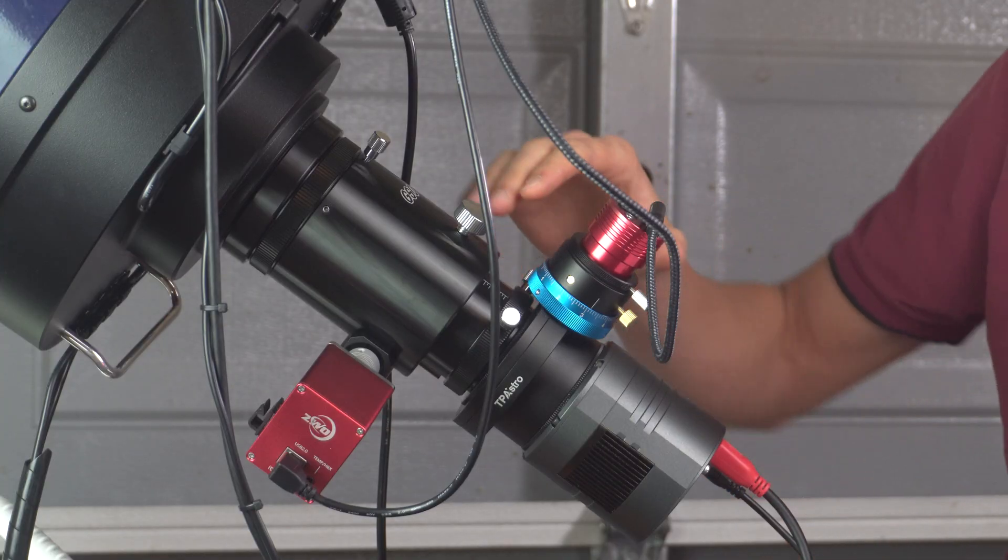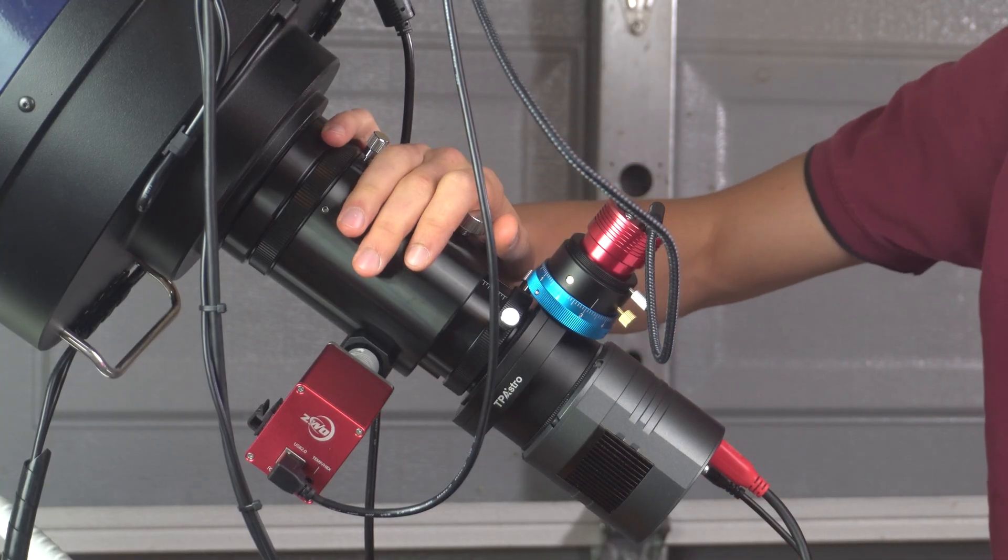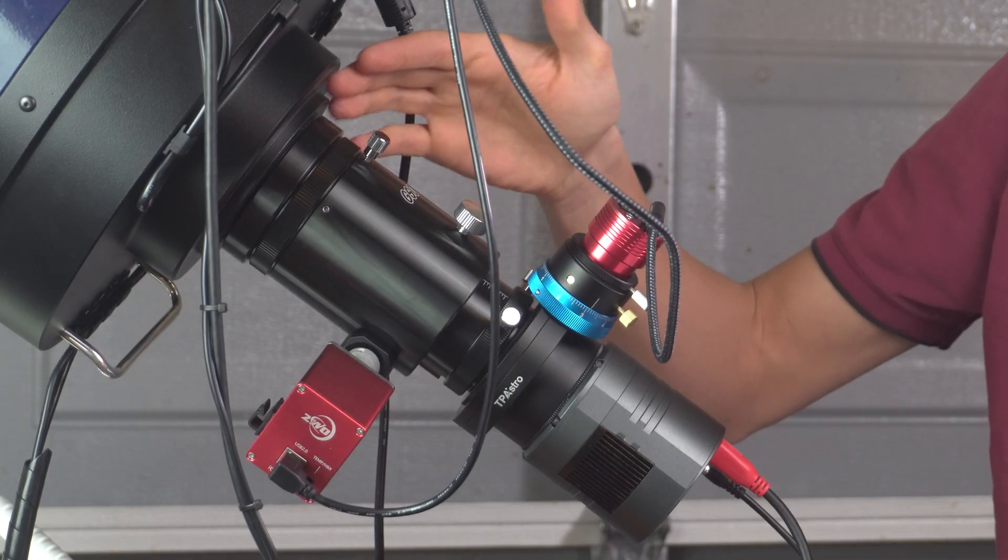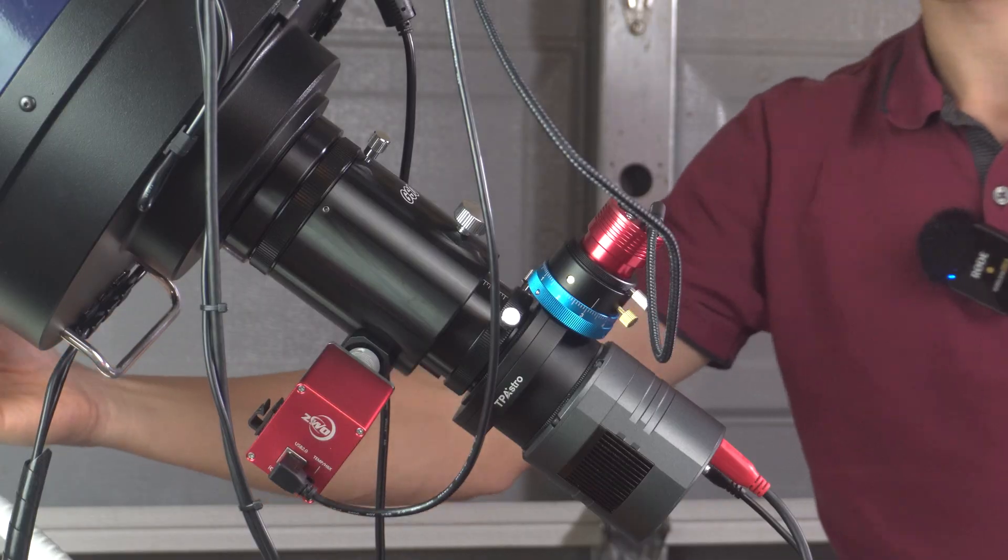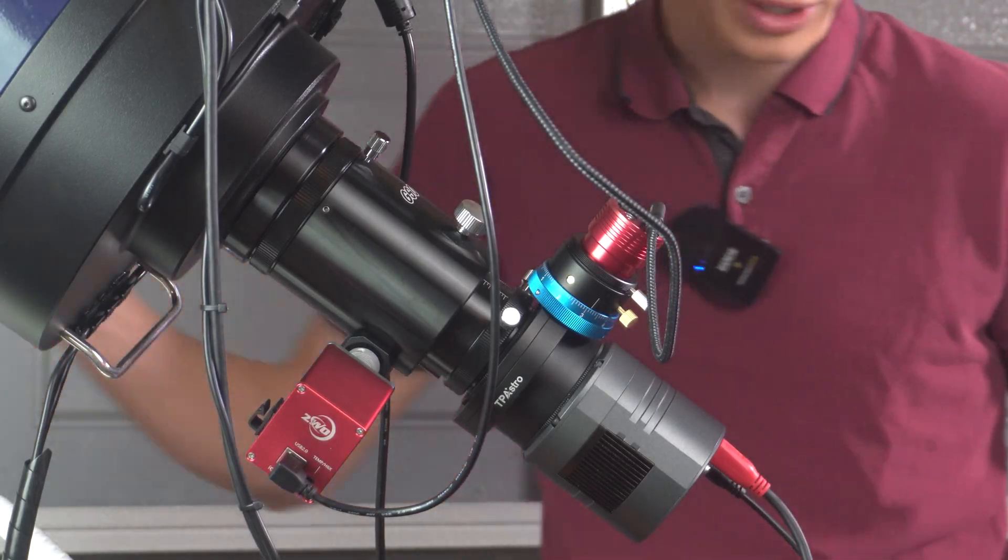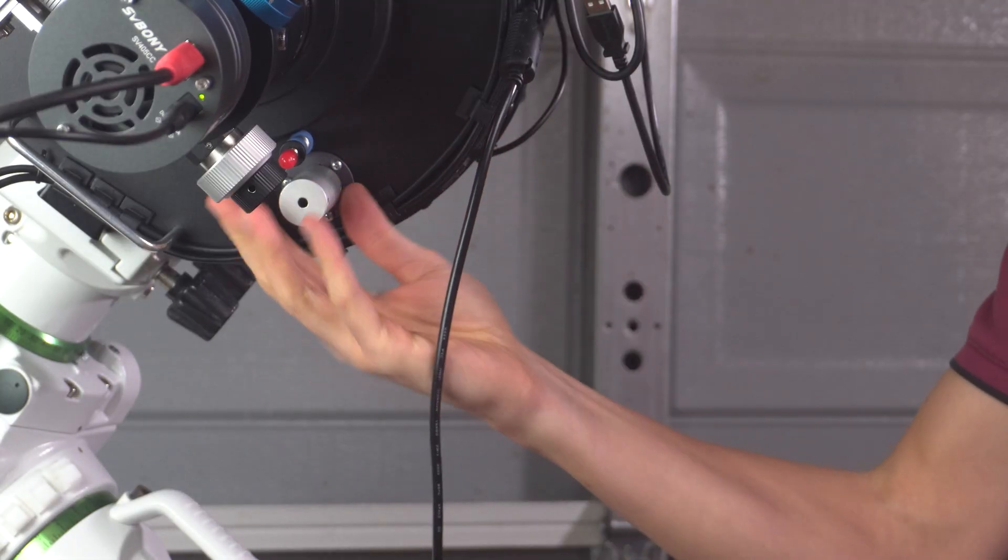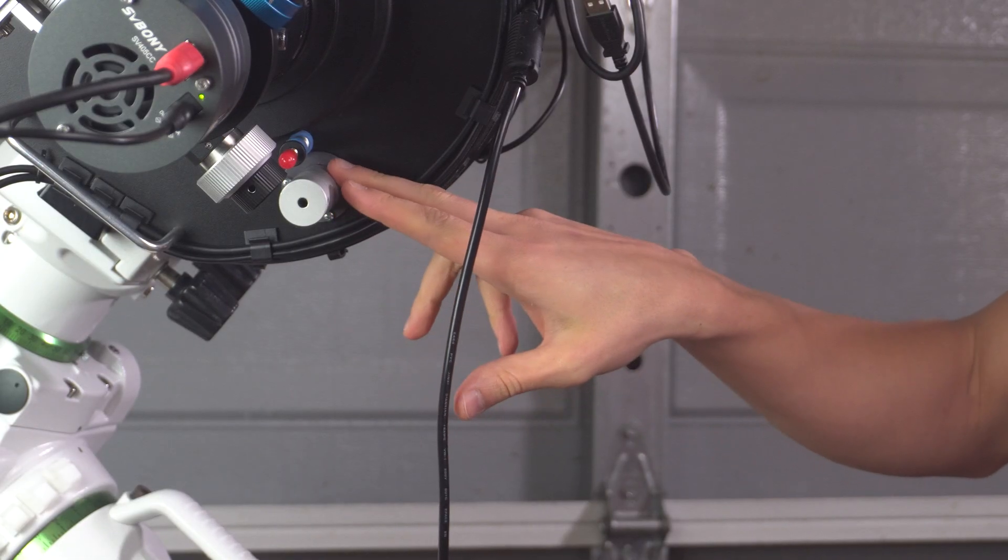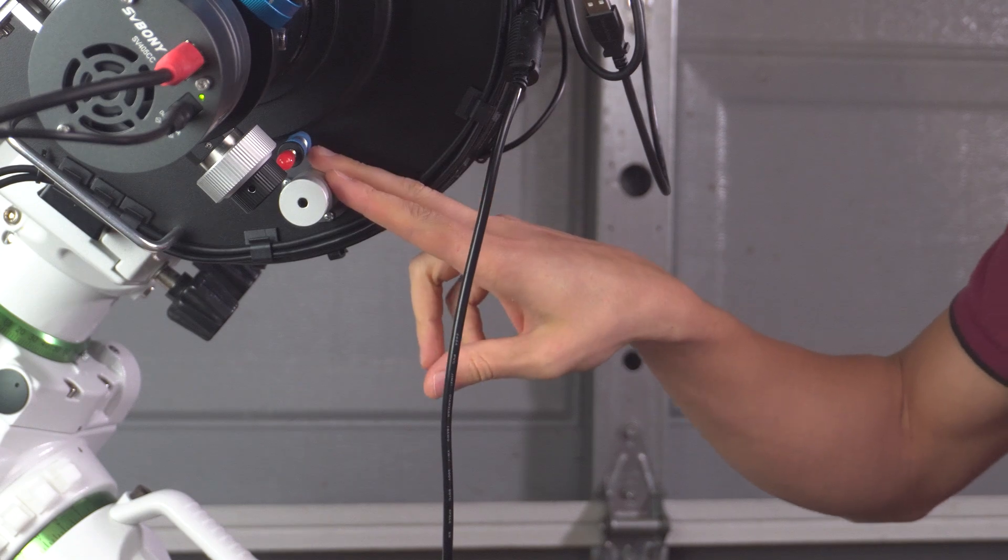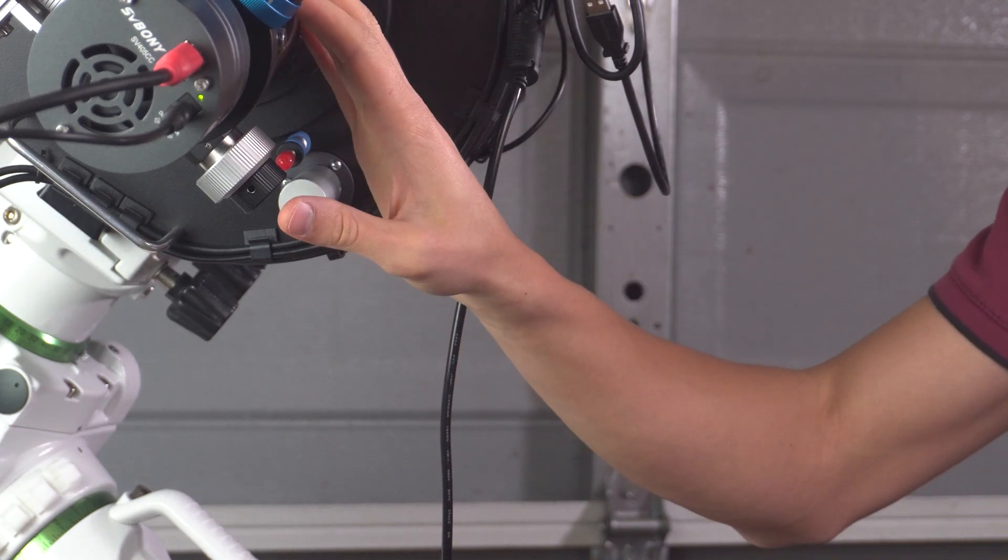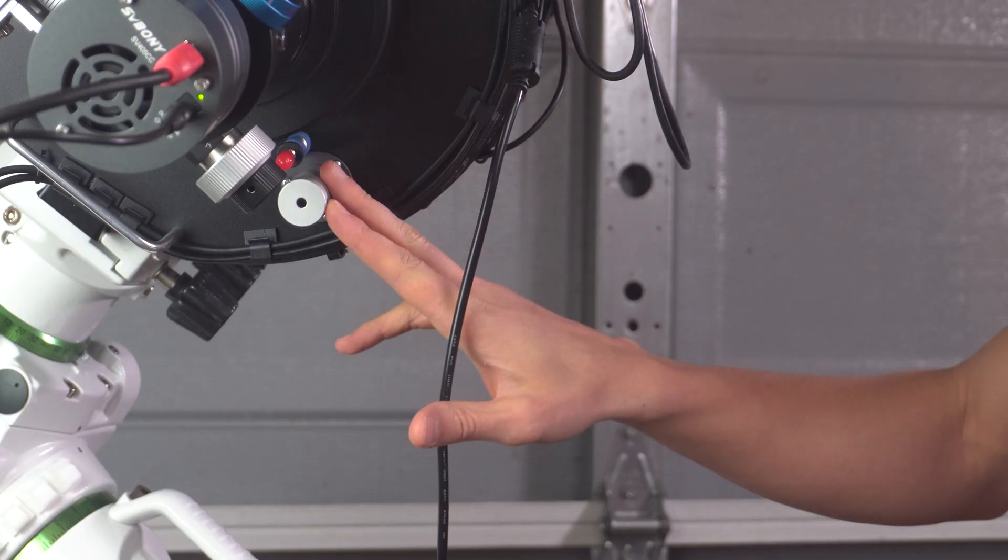In the meanwhile, if I decide to get rid of the Crayford style focuser and place the reducer closer to the OTA, like using an adapter, I'll have to use the original focuser of the telescope. Let me show it to you quickly. So yeah, I'll have to use the original focuser, which I actually tried to use in the past, and it gave me some hard time. That was the reason I switched to a Crayford style focuser. So yeah, anyway, I'll try to work on the second solution.